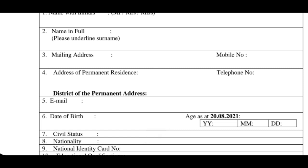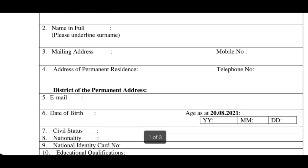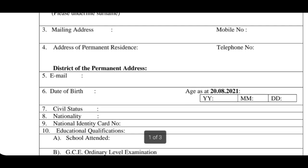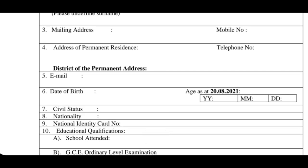You can write a number for mobile and telephone. You can write a number for district of permanent address. You can write a number of person in the district. You can write a number for date of birth. You can write a number of status.